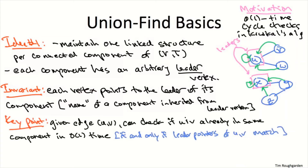How do we do that? Checking if adding edge (u, v) is going to create a cycle boils down to checking whether there's already a path between u and v. There's already a path between u and v if and only if they're in the same connected component. Given two vertices u and v, we just follow the respective leader pointers and see if we get to the same place. If they're in the same component, we get the same leader; if they're in different components, we get different leaders. So checking for a cycle just involves comparing equality of leader pointers — that is clearly constant time.